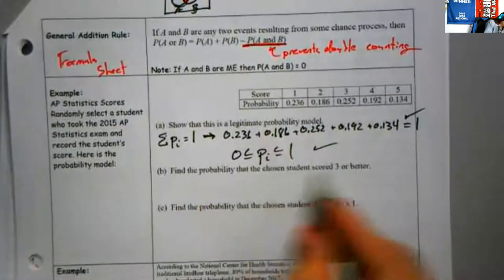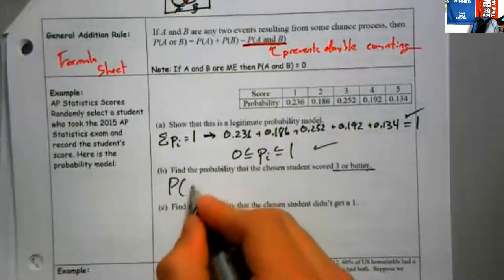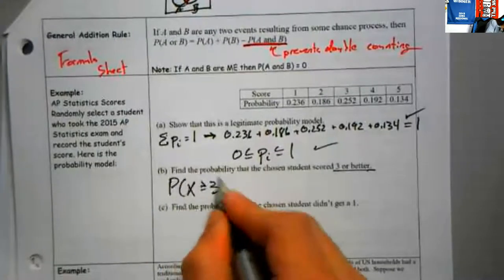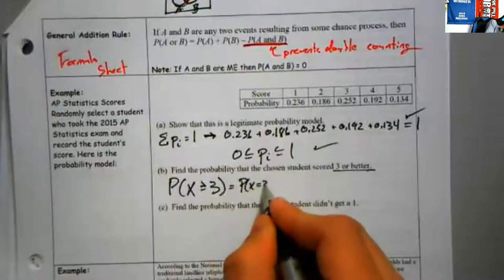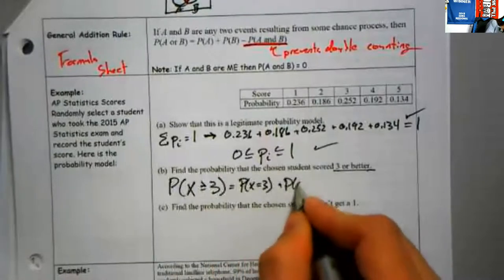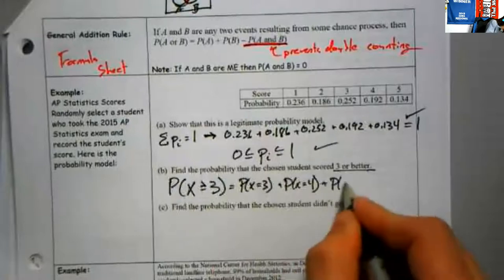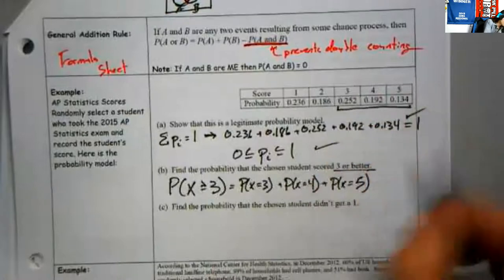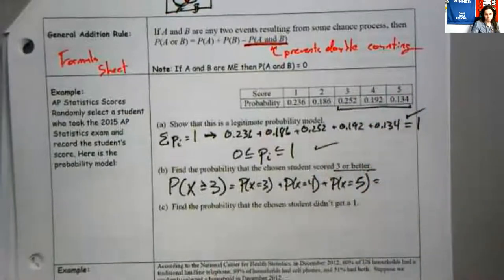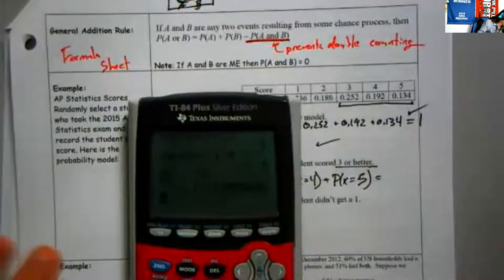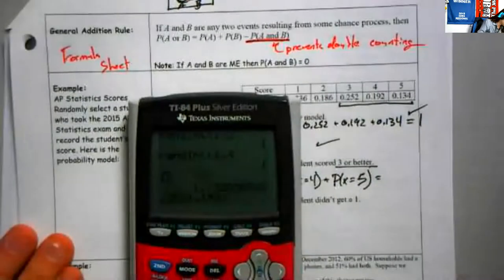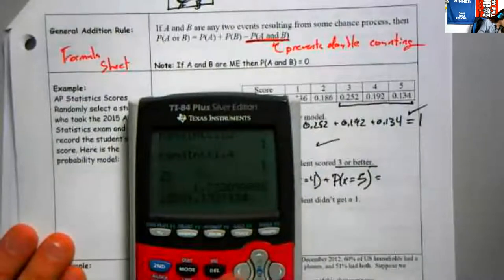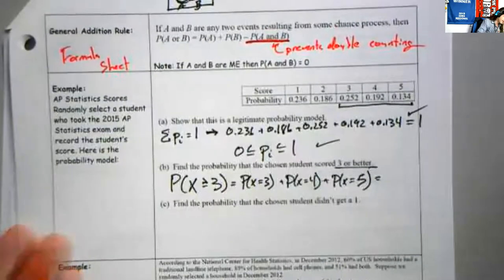Find the probability that a chosen student scored 3 or better. So that's P(X ≥ 3), which would be P(X=3) + P(X=4) + P(X=5). Add these three together: 0.252 + 0.192 + 0.134. And we get an answer of 0.578.